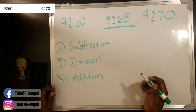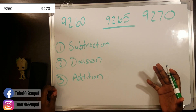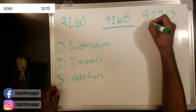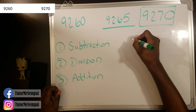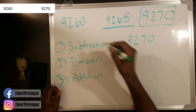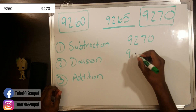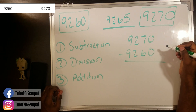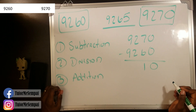If you can do all three of these, then finding the midpoint is going to be very simple for you. The first thing you do — subtraction — is you take the end number that's the biggest. In this case, 9,270, and we subtract the first number, 9,260. So if we subtract these two, you'll realize you get 10, right? So step one, done.